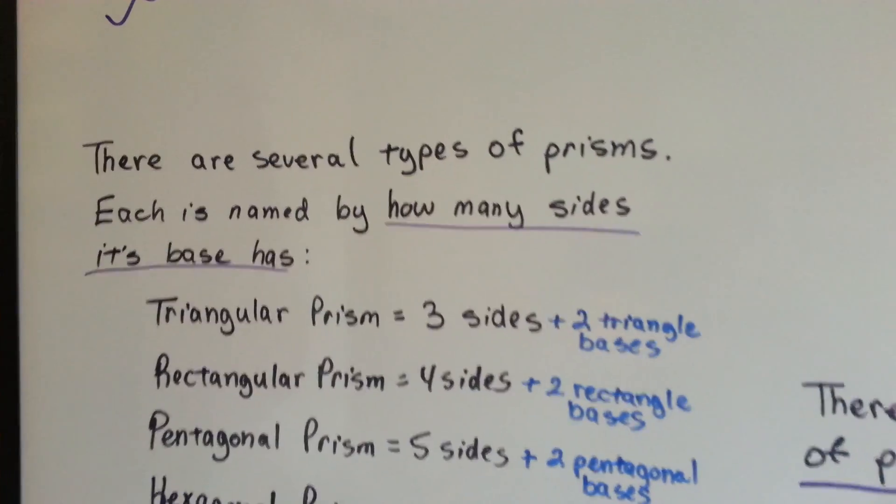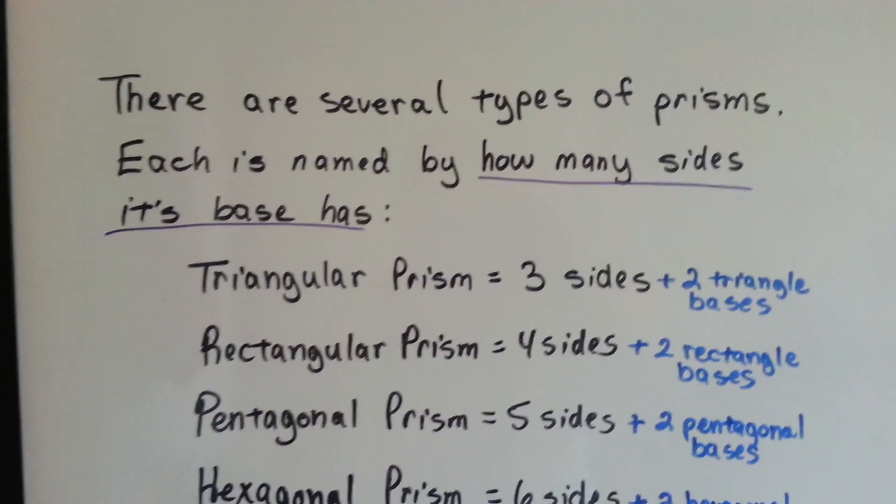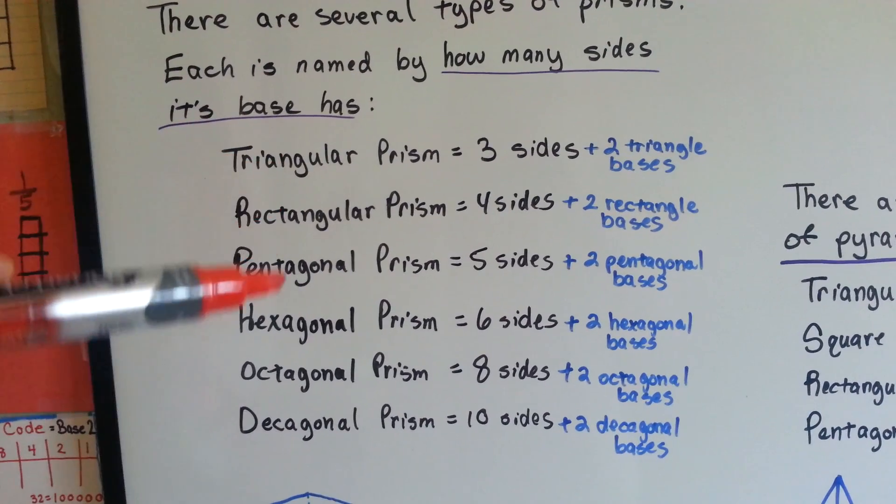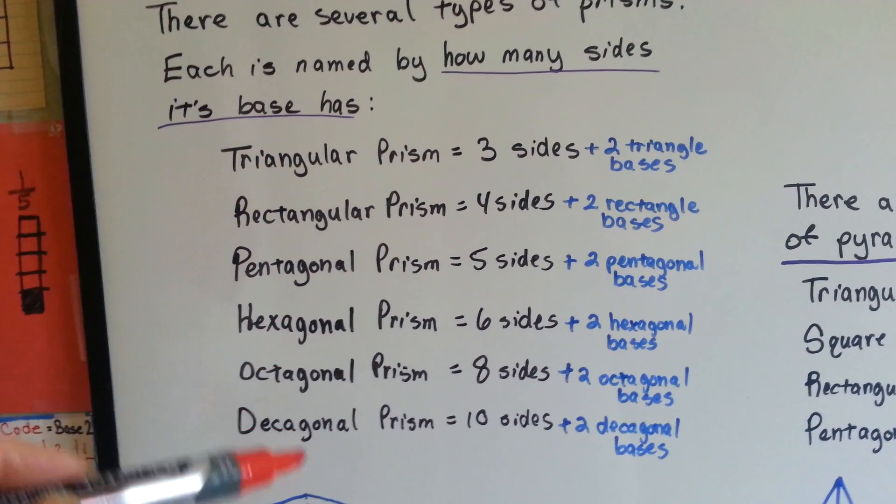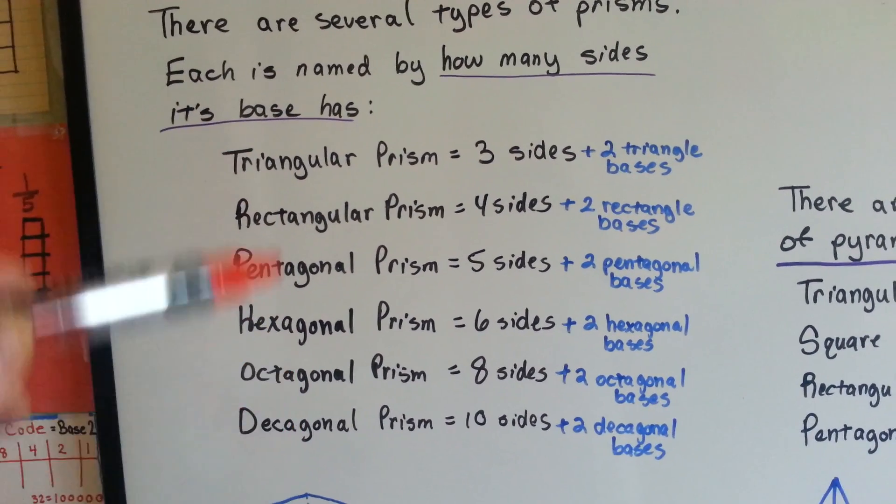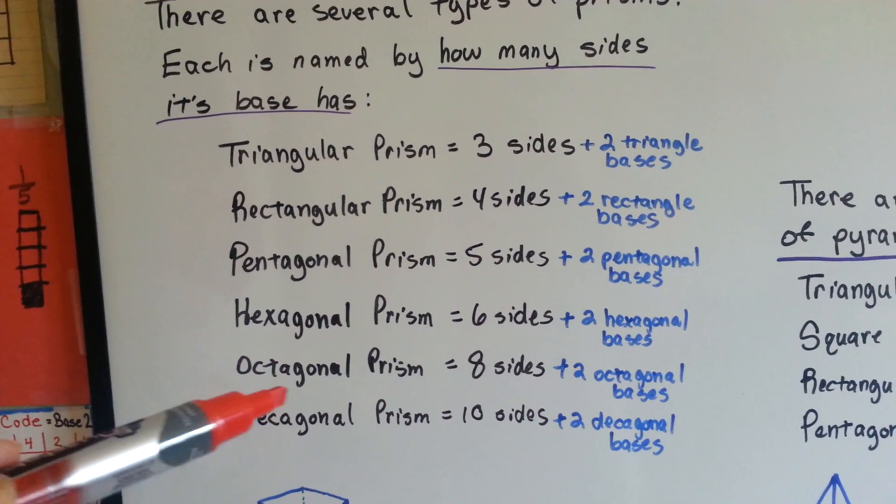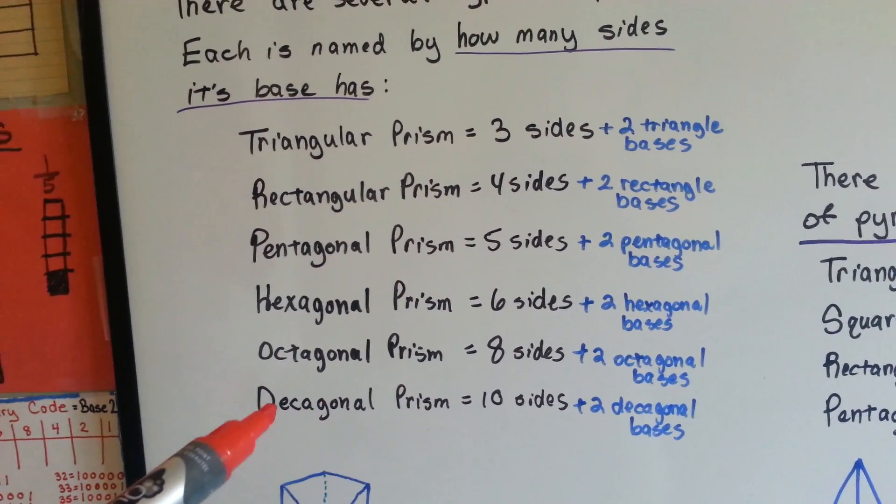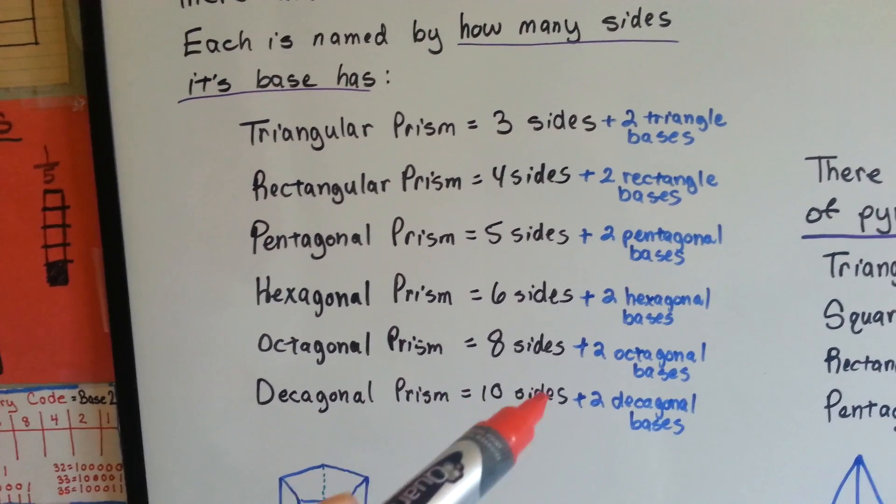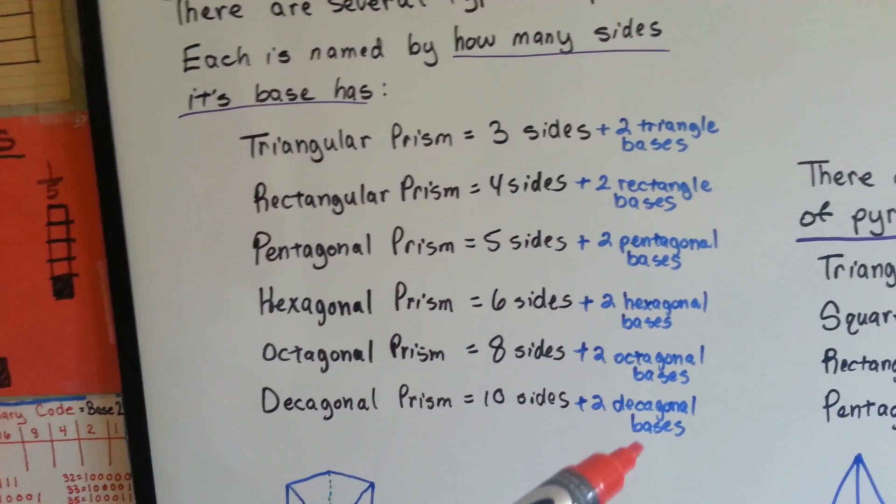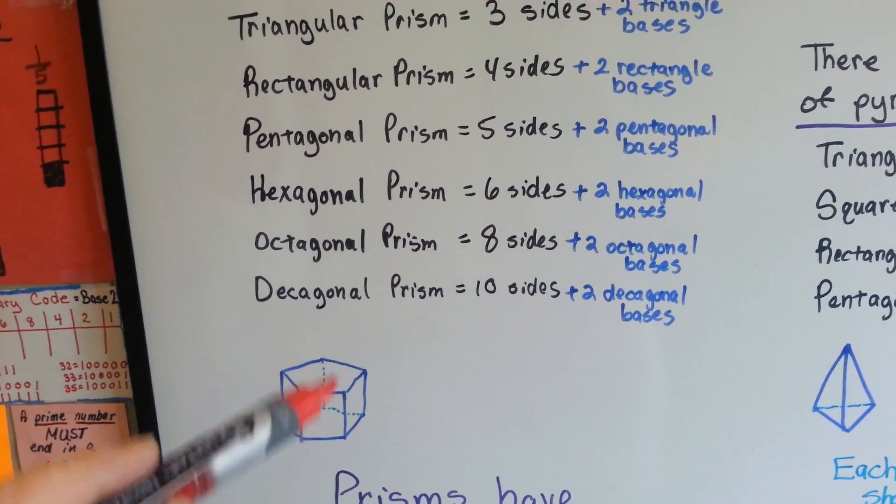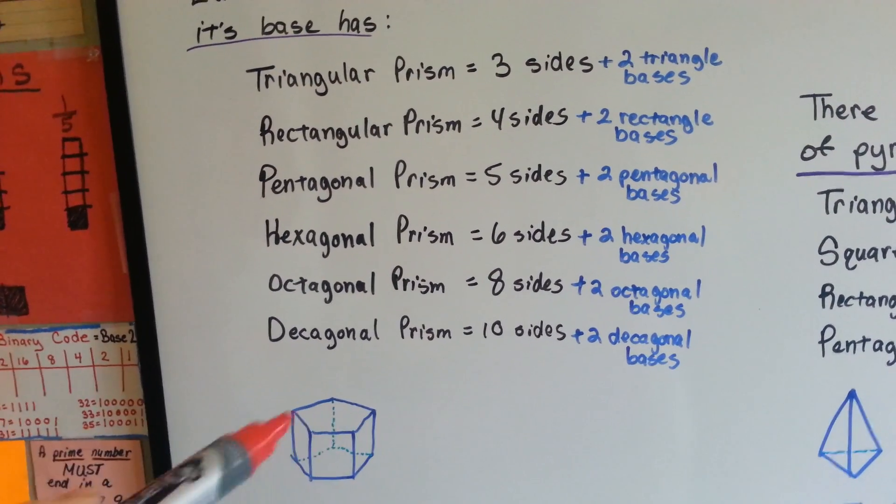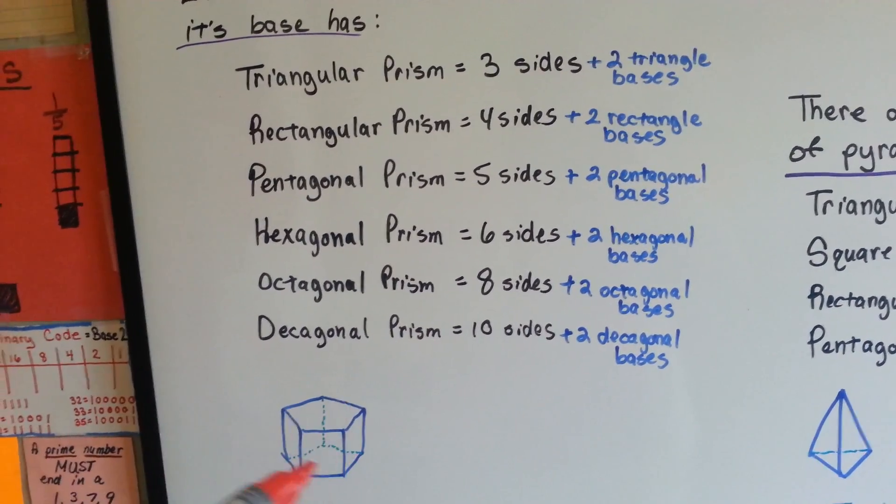There are several types of prisms. Each is named by how many sides its base has. Whatever the number of sides of the base, a triangle has three. If the base has six sides, then it's going to be a hexagonal prism. If the base has ten sides, it's going to be a decagonal prism. But they all have two bases, a top and a bottom, like a box.